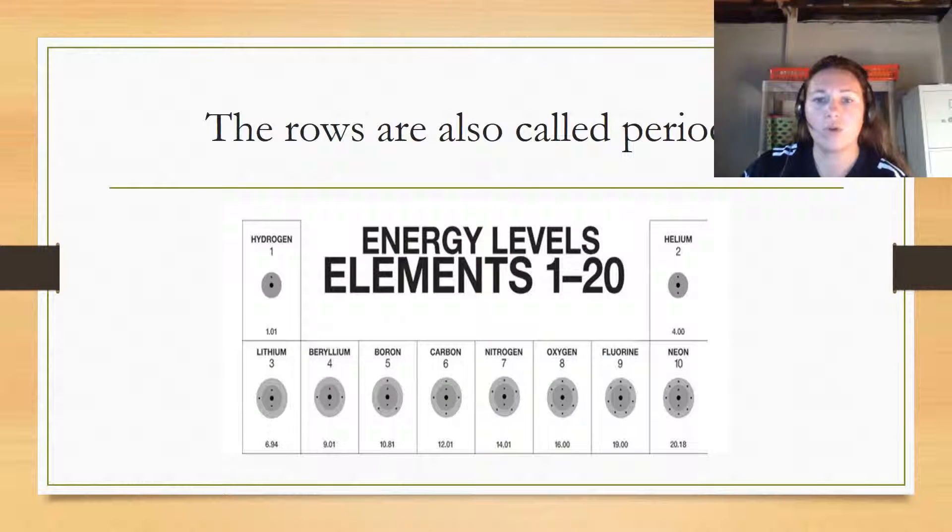Rows are also called periods. This row here is period one, and this one is period two. As you see, they match. Hydrogen, number one, has one electron. Helium has two electrons. Go into period two and the same thing—it follows the pattern.